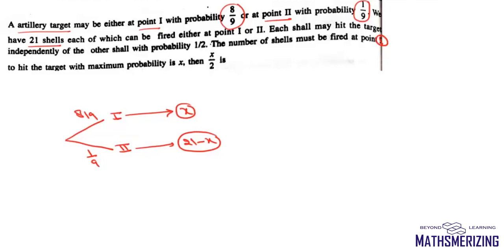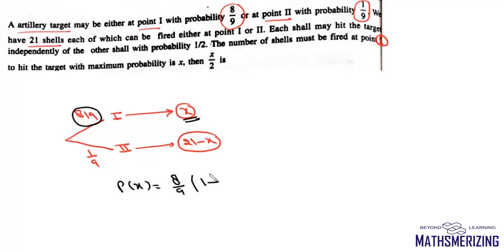The probability of hitting the target as a function of x is: the probability of choosing the first target is 8/9, and we have fired x shells onto it, so at least one must hit. Using the complement rule, it becomes (8/9) times (1 minus (1/2)^x).